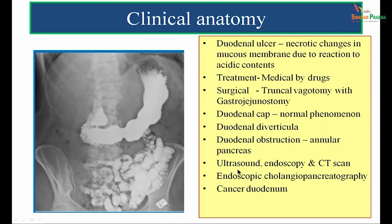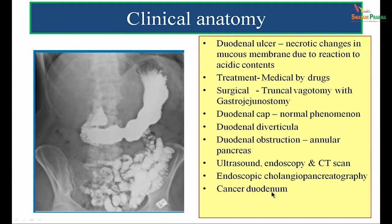Endoscopic cholangiopancreatography (ERCP) is a procedure done through an endoscope to visualise the biliary tree — the common bile duct, pancreatic ducts, and hepatic ducts. A probe is passed through the endoscope, entering via the major duodenal papilla, and the catheter is advanced into the major pancreatic duct, minor pancreatic duct, and common bile duct. Finally, like any other organ, the duodenum can also develop malignancy, known as cancer of the duodenum.